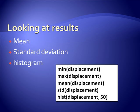But it's even more common to look at a histogram. So there's a hist command, which will look at the histogram of the displacement data. In this case, using 50 groups in the histogram.